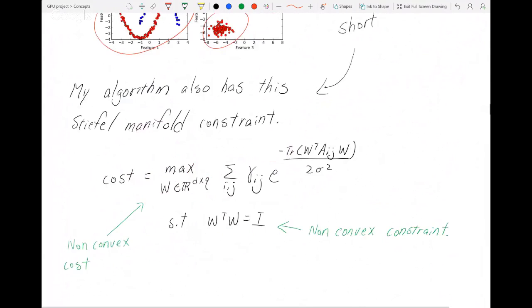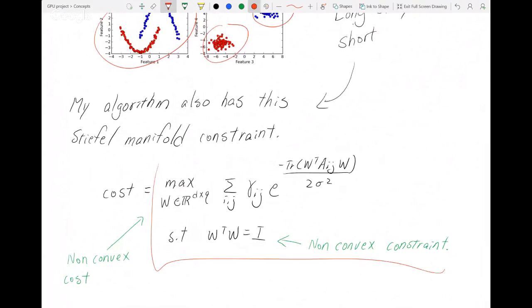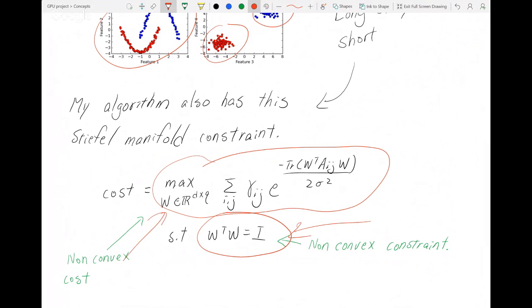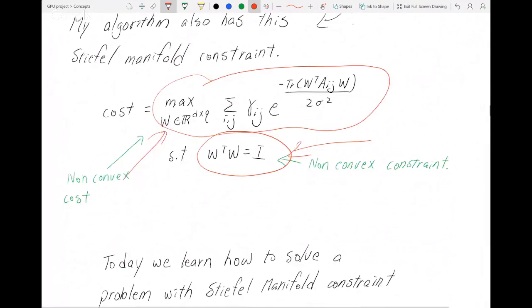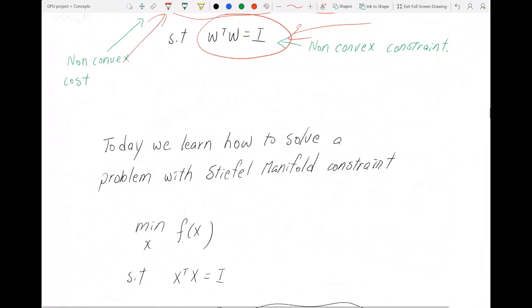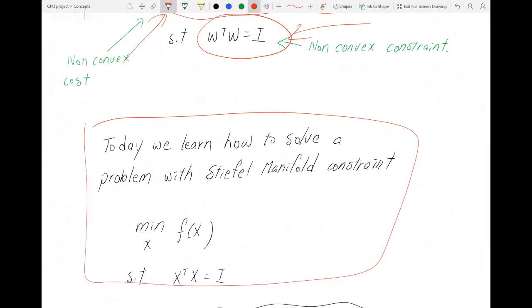Long story short, the formula I work with is quite complicated because it has this orthogonality constraint we're talking about today. It's not convex and doesn't have a convex solution. So it's quite a complicated problem. Today we're going to learn how to solve this problem, and in the next video we'll continue from here. Thank you.